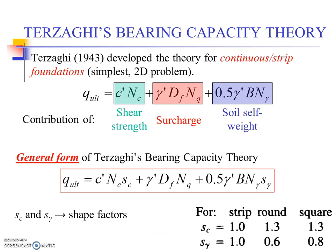Earlier, if you recall, we discussed the theory presented by Terzaghi in 1943 for continuous and strip foundations. Terzaghi's model incorporated three different aspects of a foundation: one involving the shear strength of the soil, the other involving surcharge, and the other involving the soil self-weight.